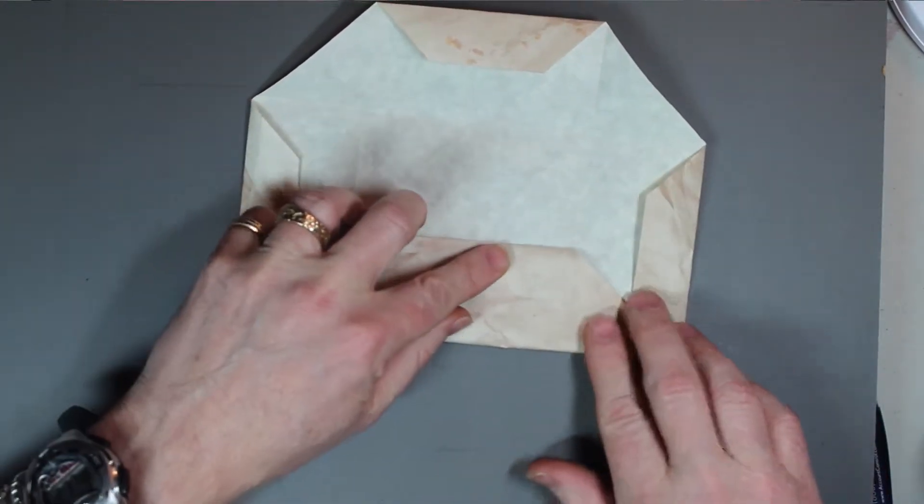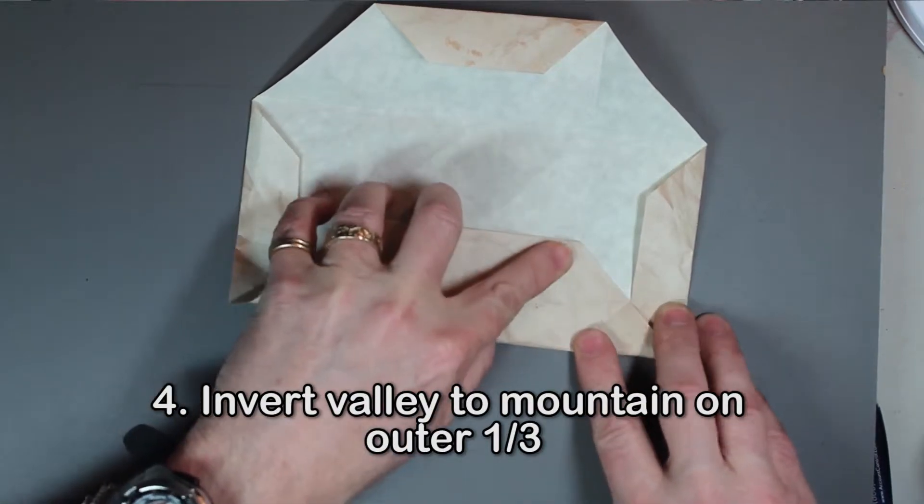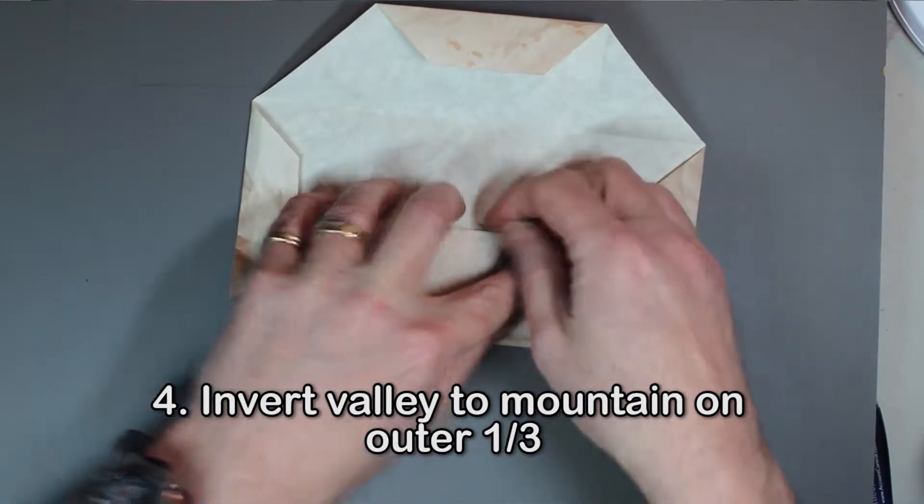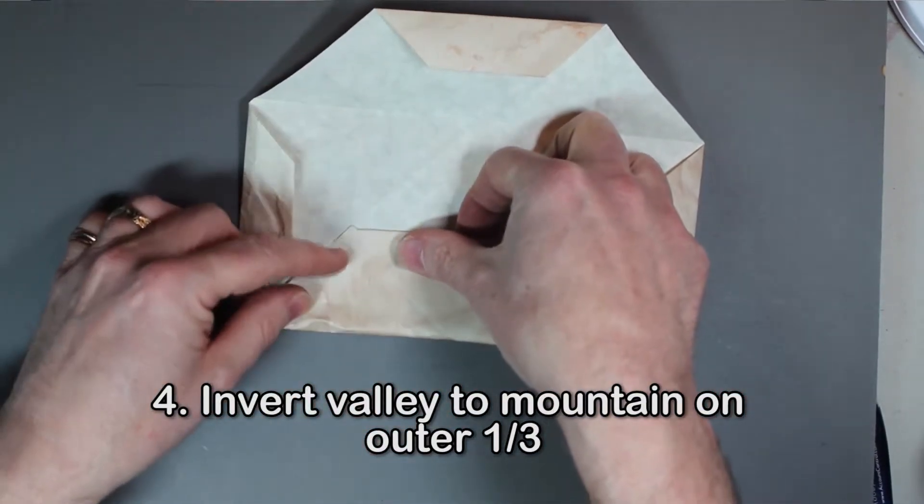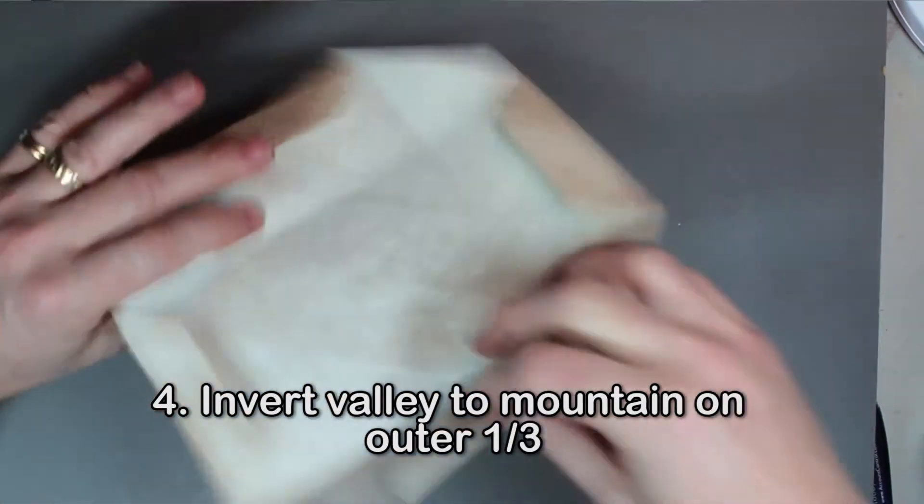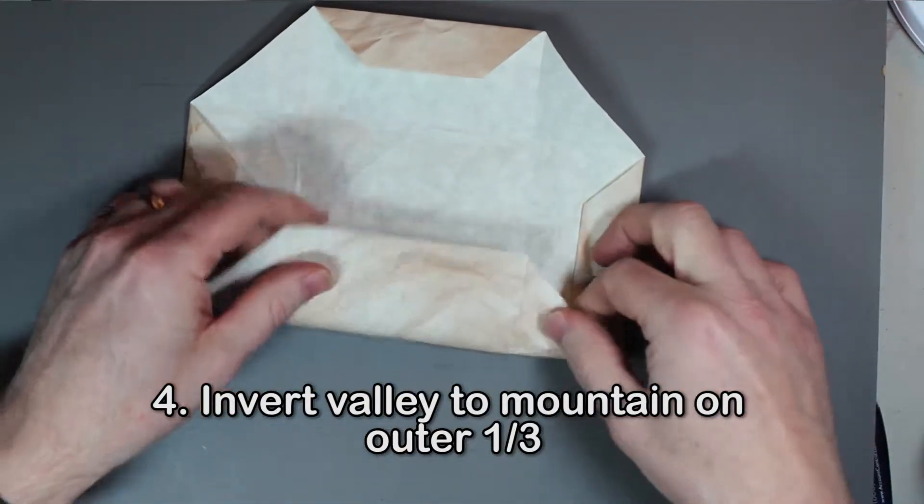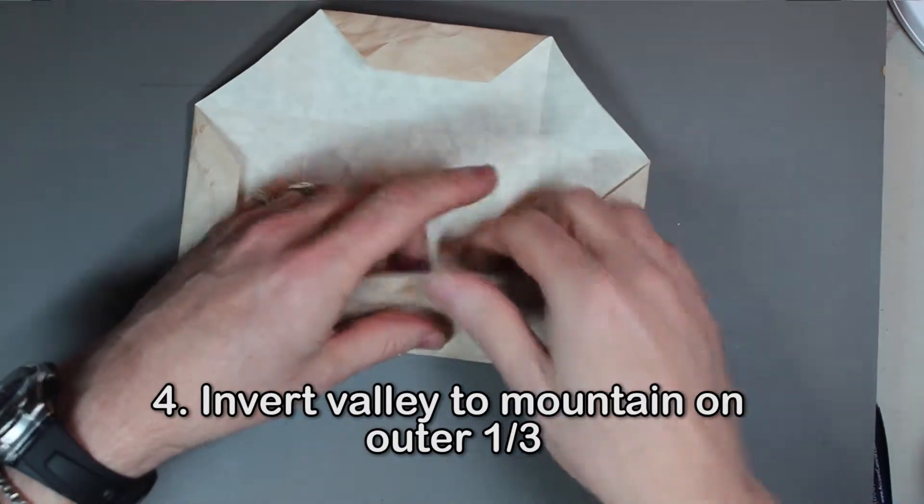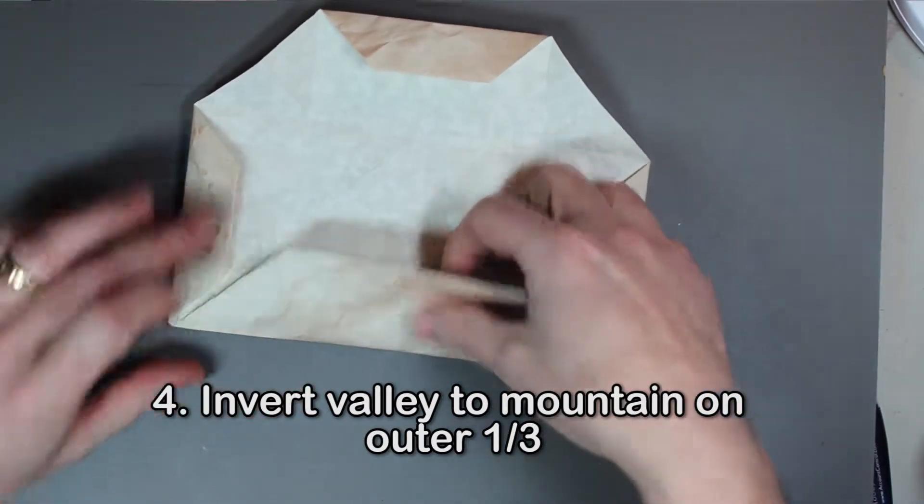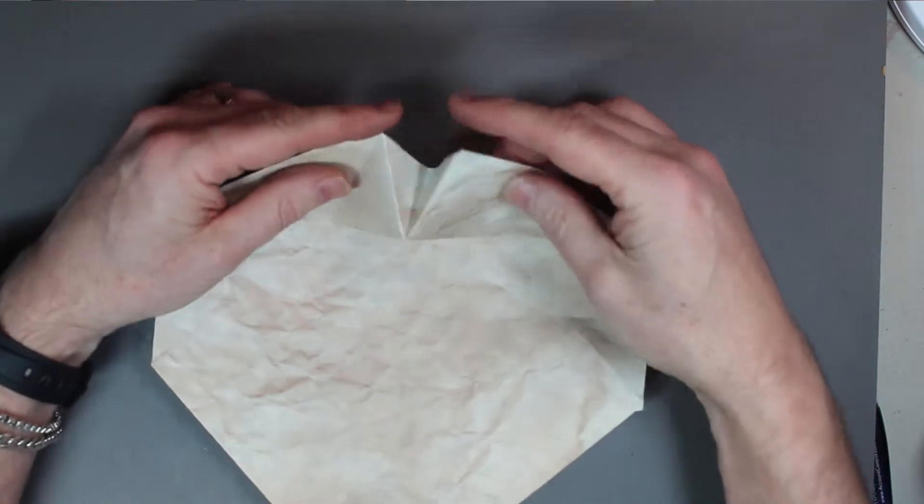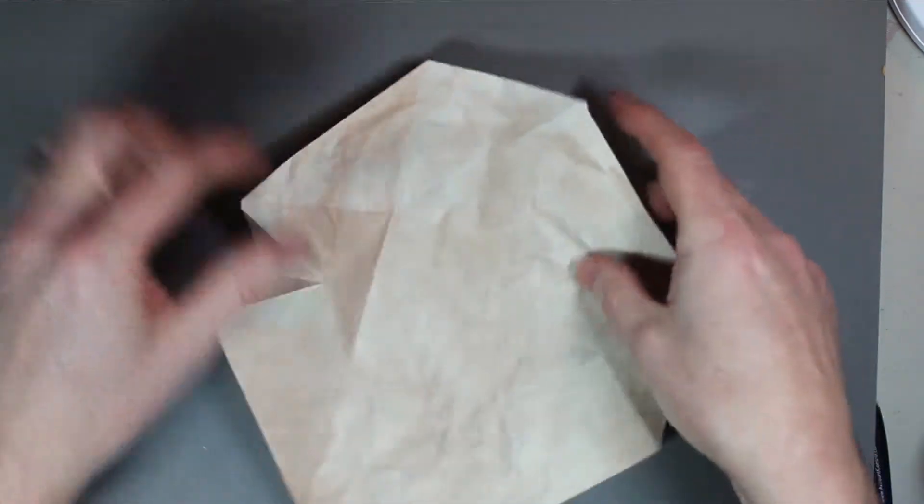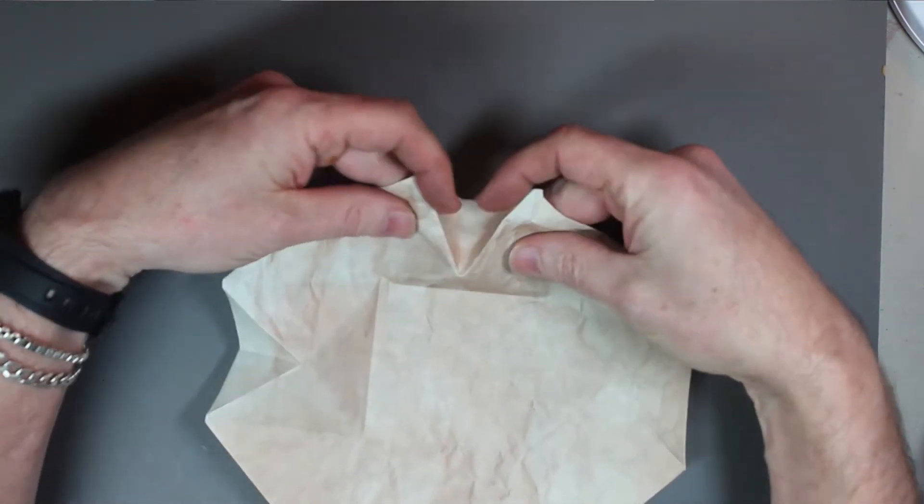In other words, we did have a valley fold there, and now we have a mountain fold, and this is the structure that it makes if you just kind of look all the way around this. So you can begin to see what the box is going to look like.